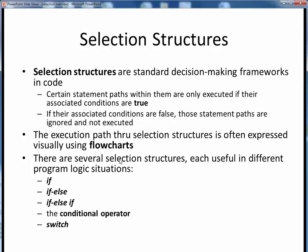We will be looking at the following five different selection structures: if, if-else, if-else-if, the conditional operator, and the switch statement. Different ones of these might be the most useful to use, dependent upon a particular program logic situation.